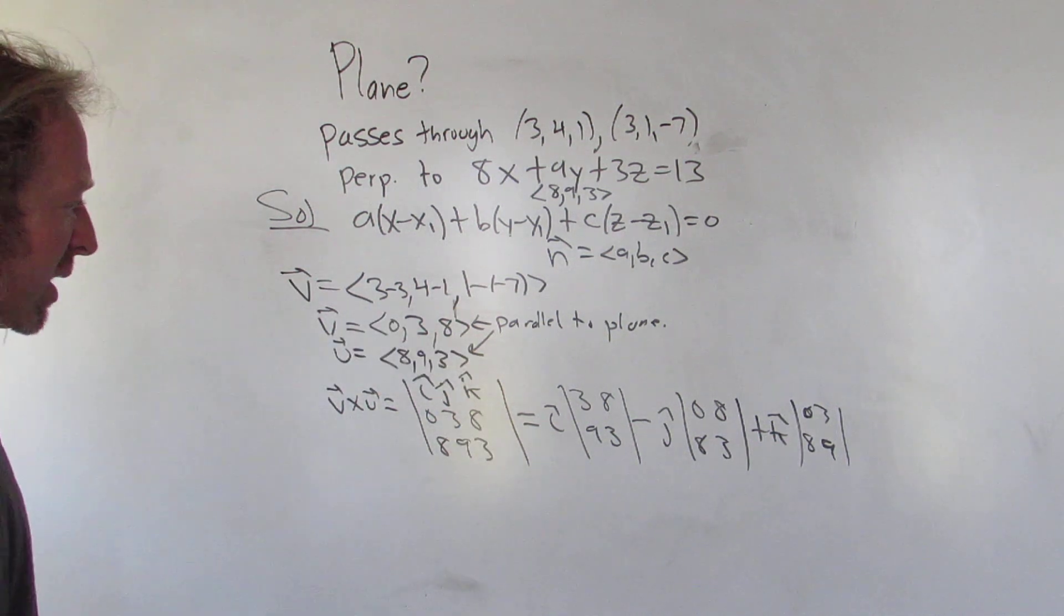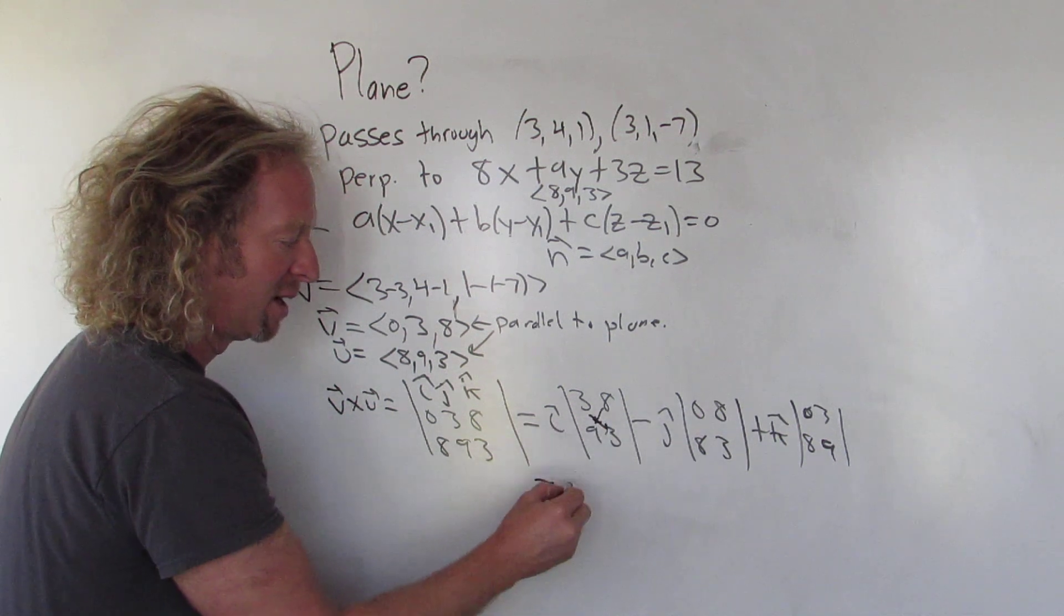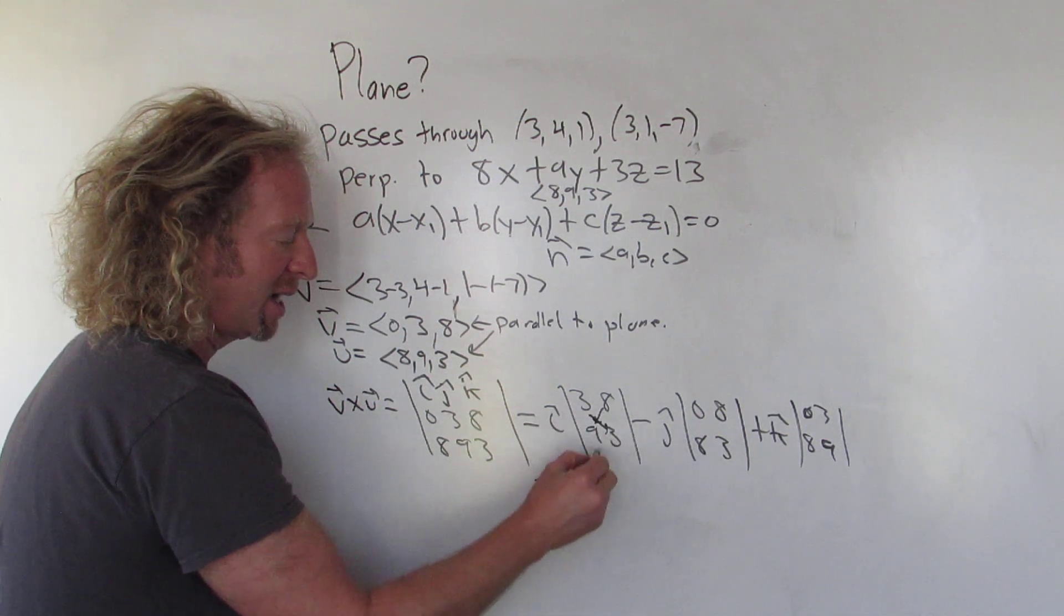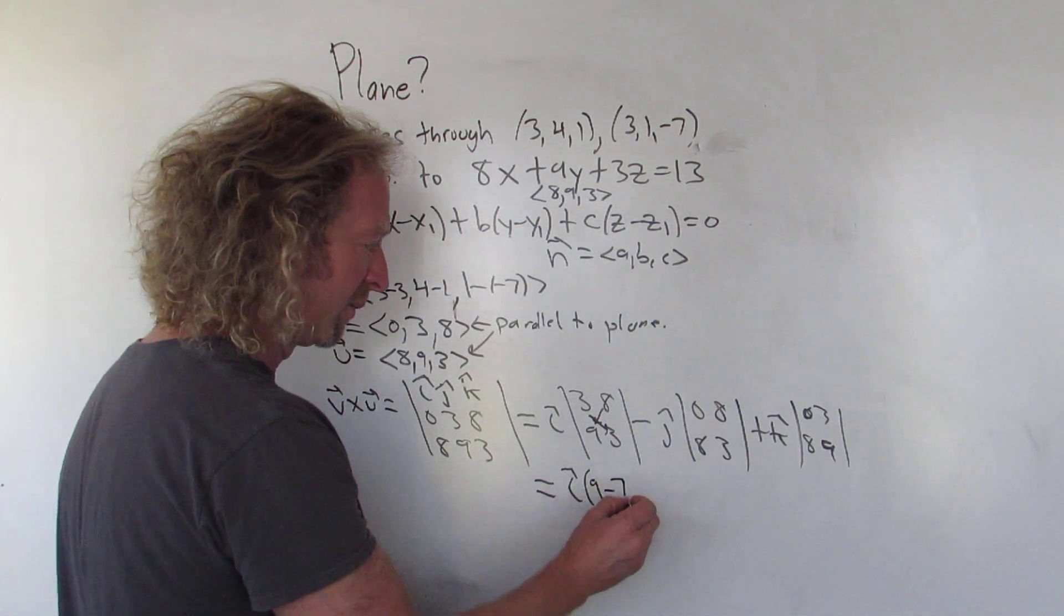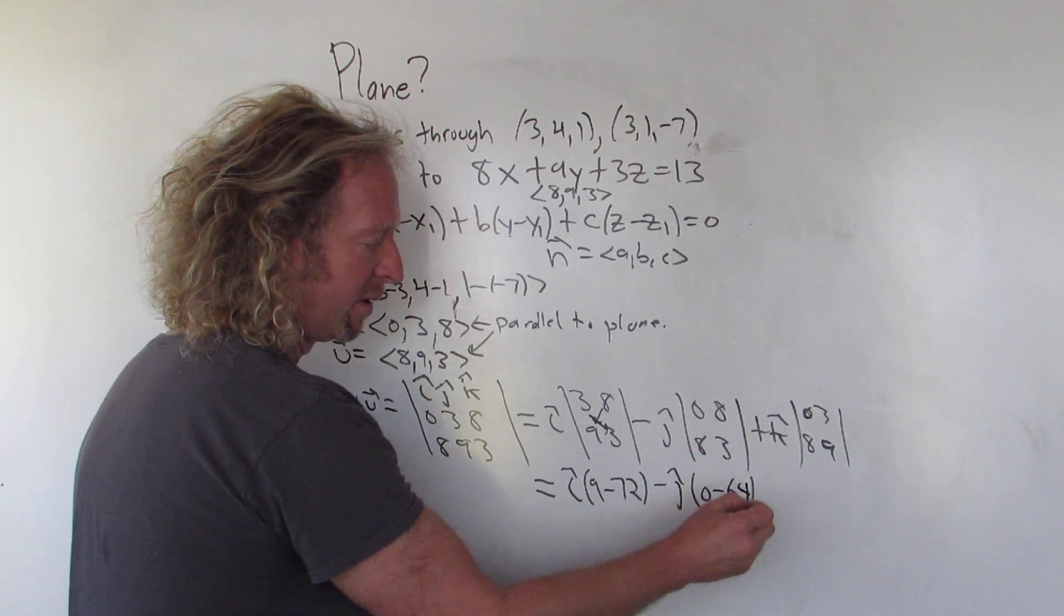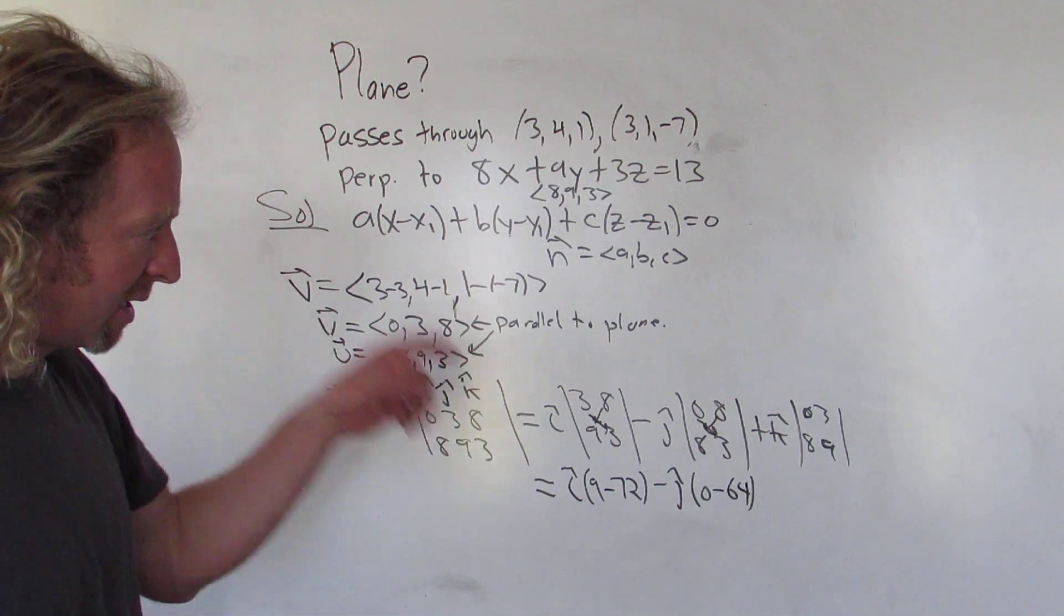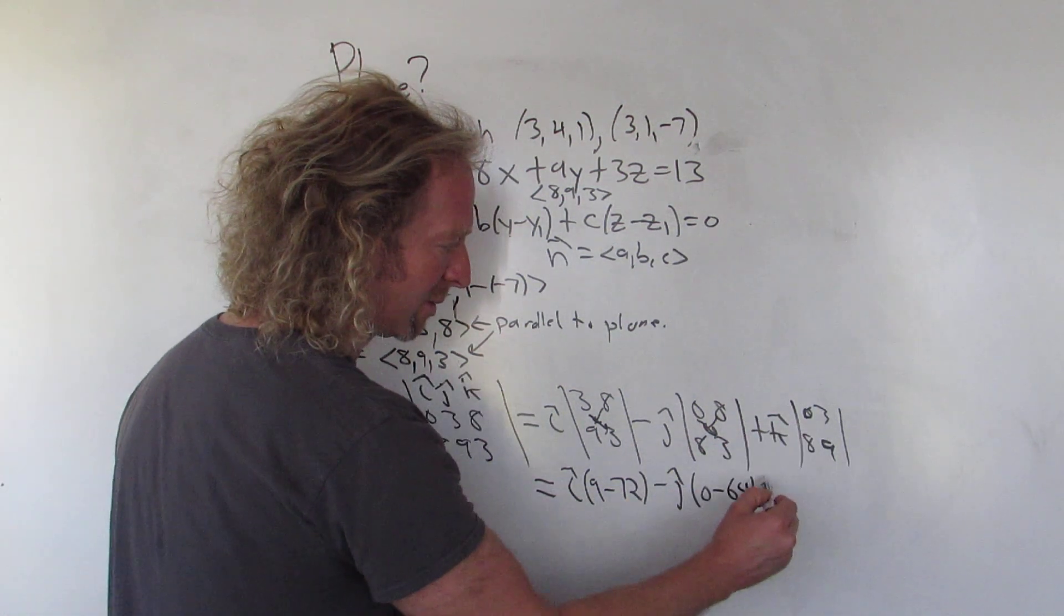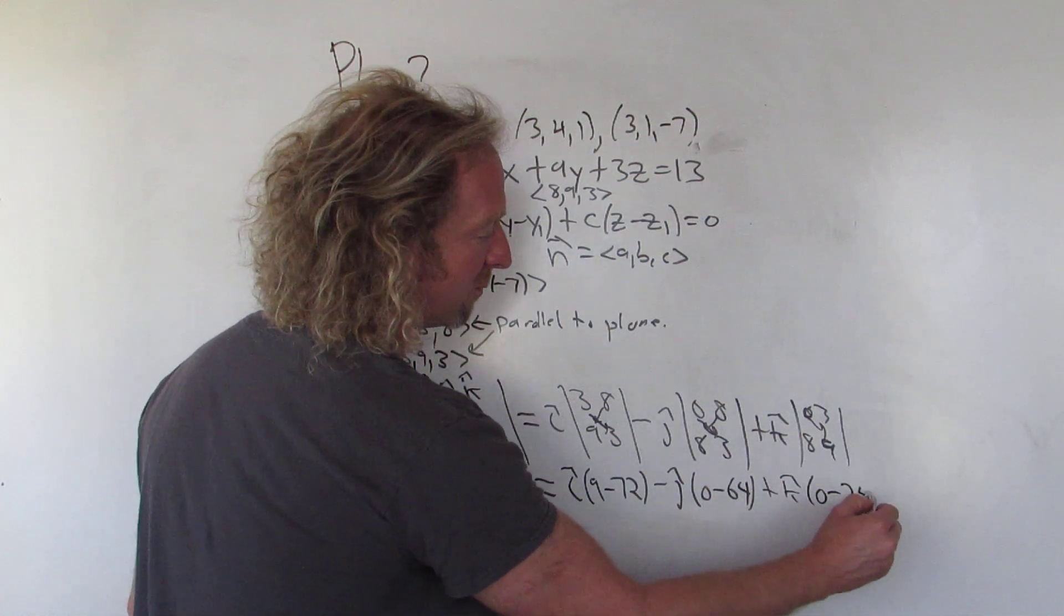Okay. All right. Now we just work it out. So you multiply this times this, and then you subtract this times this. So it'll be i hat, 9 minus 72. 8 times 9 is 72. Some big numbers here. Minus j hat. That's going to be 0 minus 64, right? Because 0 times 3 is 0. 8 times 8 is 64. And then 0 times 9 is 0. So plus k hat, 0 minus 24. Tough problem.